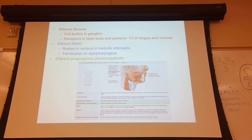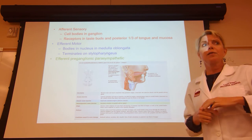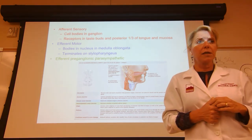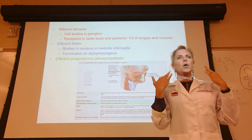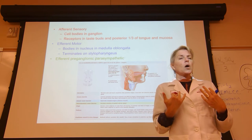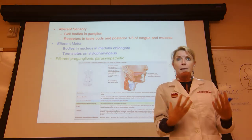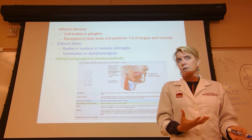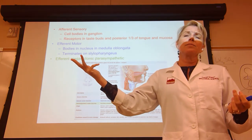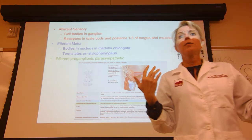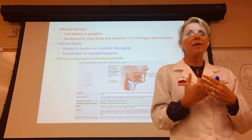Cranial nerve IX, the glossopharyngeal, is another big hitter — it is mixed, with sensory, somatic motor, and visceral motor components. The visceral motor part makes it part of the parasympathetic division of the autonomic nervous system. The parasympathetic division is in control of your body when you are at rest — resting, digesting, peeing, and reading — all the things you can do when you are not running for your life.